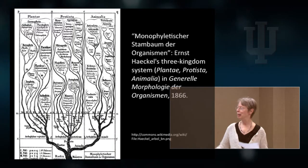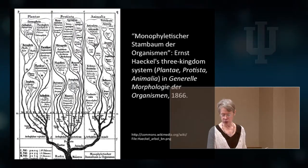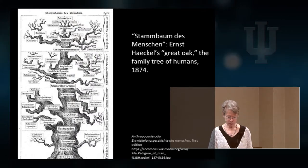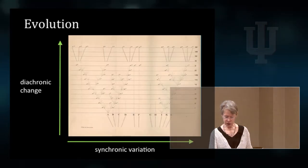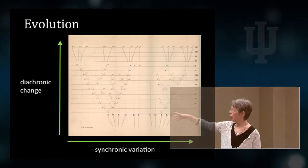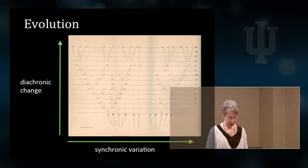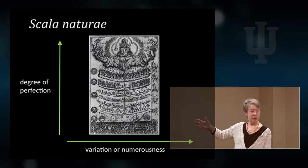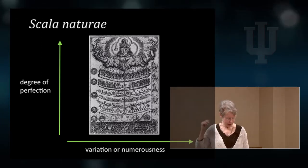Here are two tree diagrams from Ernst Haeckel in the years shortly after Darwin. I wanted to demonstrate the way that the axes work on these tree diagrams. We get the diachronic change in the vertical dimension and synchronic variation on the x-axis. With the Scala Naturae, to compare that, the y-axis is different. That's degree of perfection rather than chronology. But the x-axis is the same.